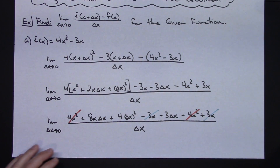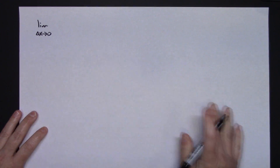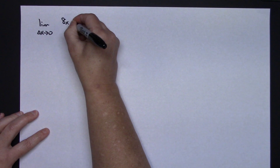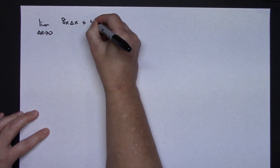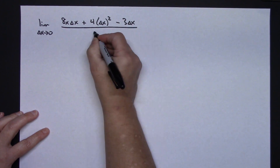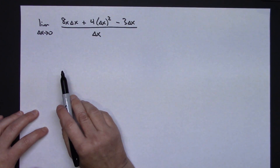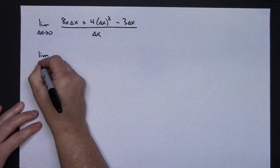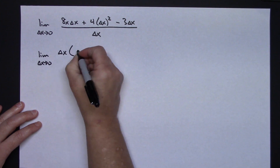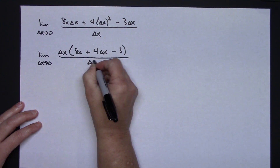I'm going to rewrite that line with everything crossed out. So I have the limit as delta x approaches 0 of 8x·delta x + 4·(delta x)² - 3·delta x, all over delta x. Now I look at the numerator and see a common factor of delta x. Factoring out delta x leaves the limit as delta x approaches 0 of delta x times (8x + 4·delta x - 3), all over delta x.